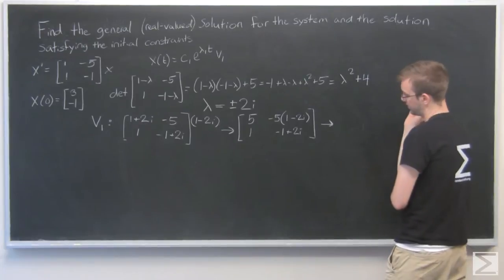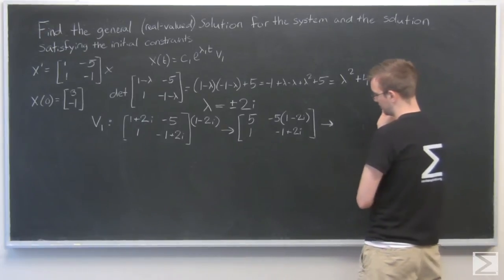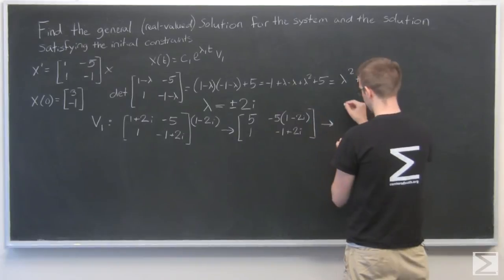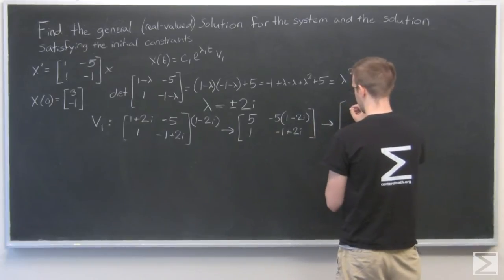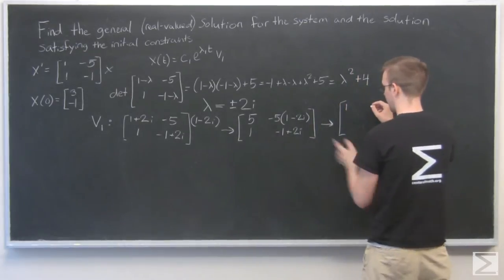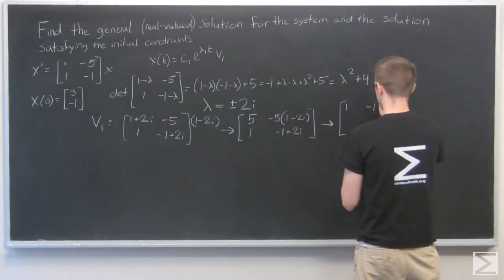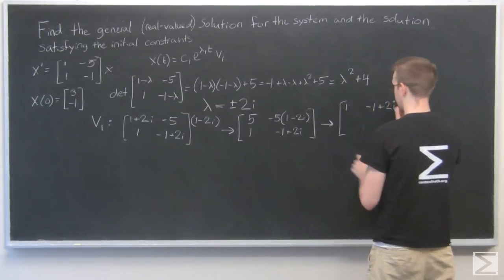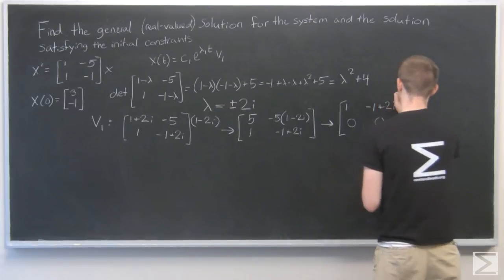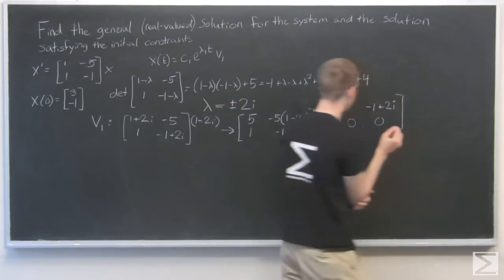And -5 times (1-2i). I can divide the top row by 5, and then I'll just have the same number on the top and the bottom: 1, -1+2i. And the same thing on the bottom, so just 0.